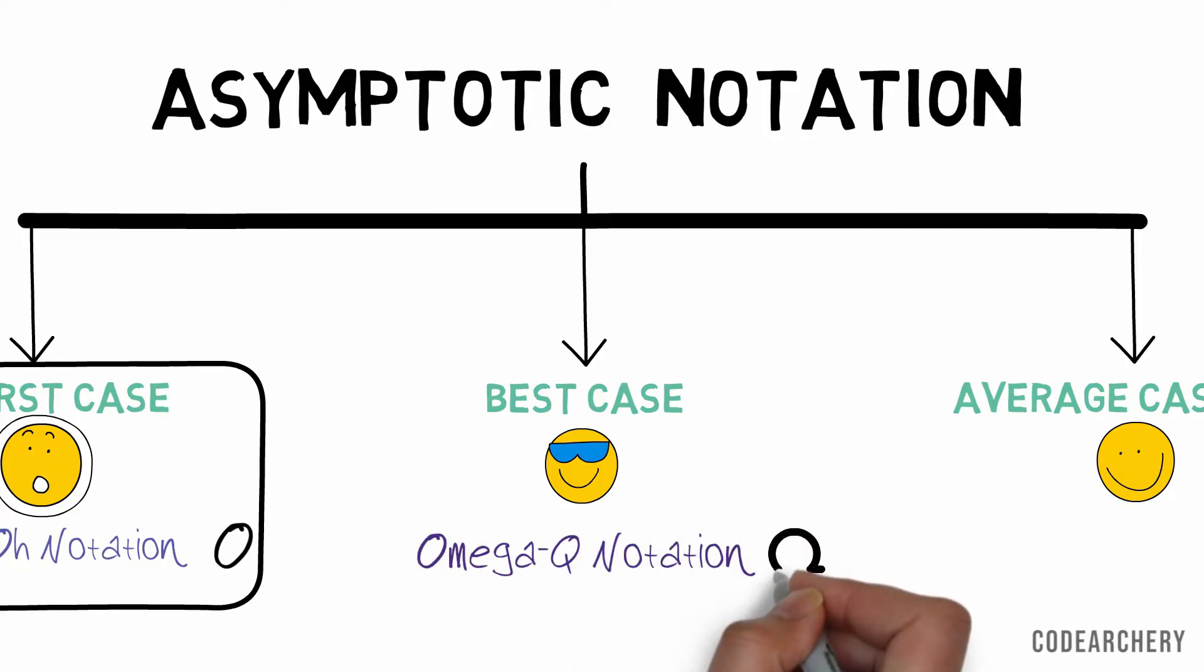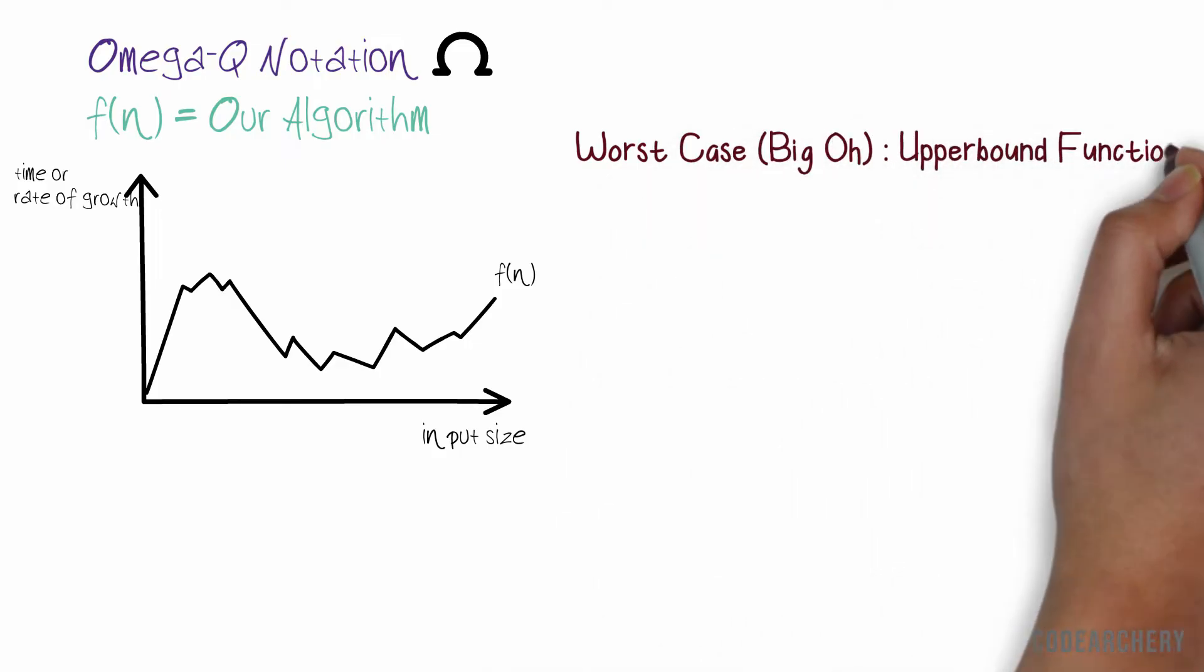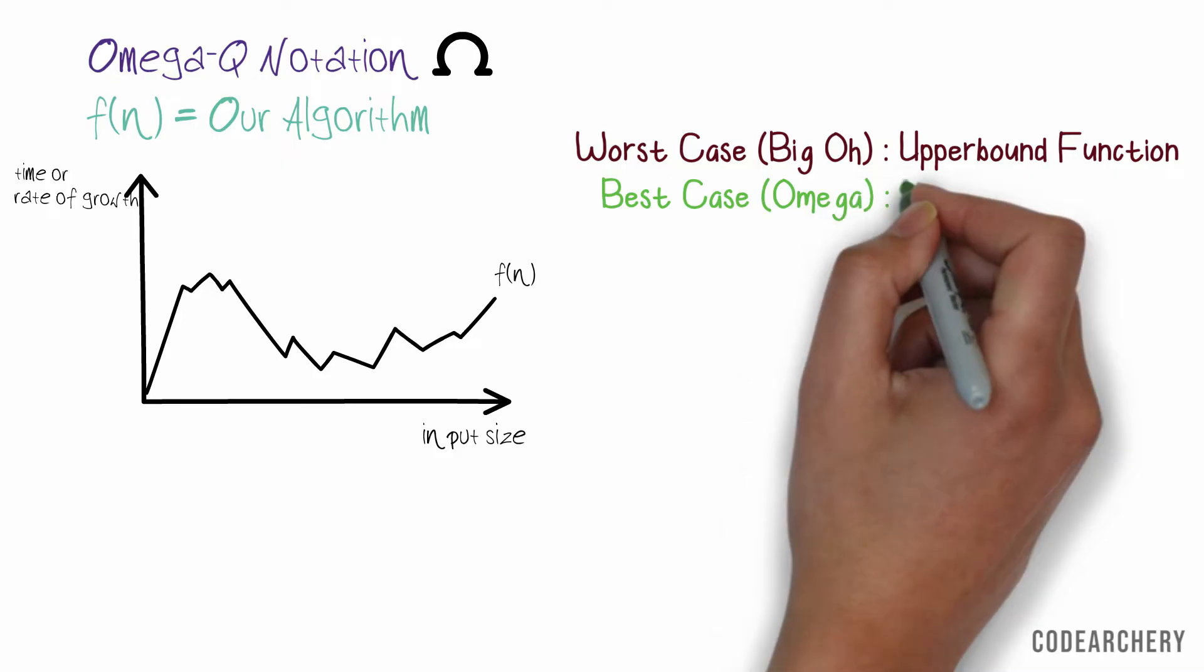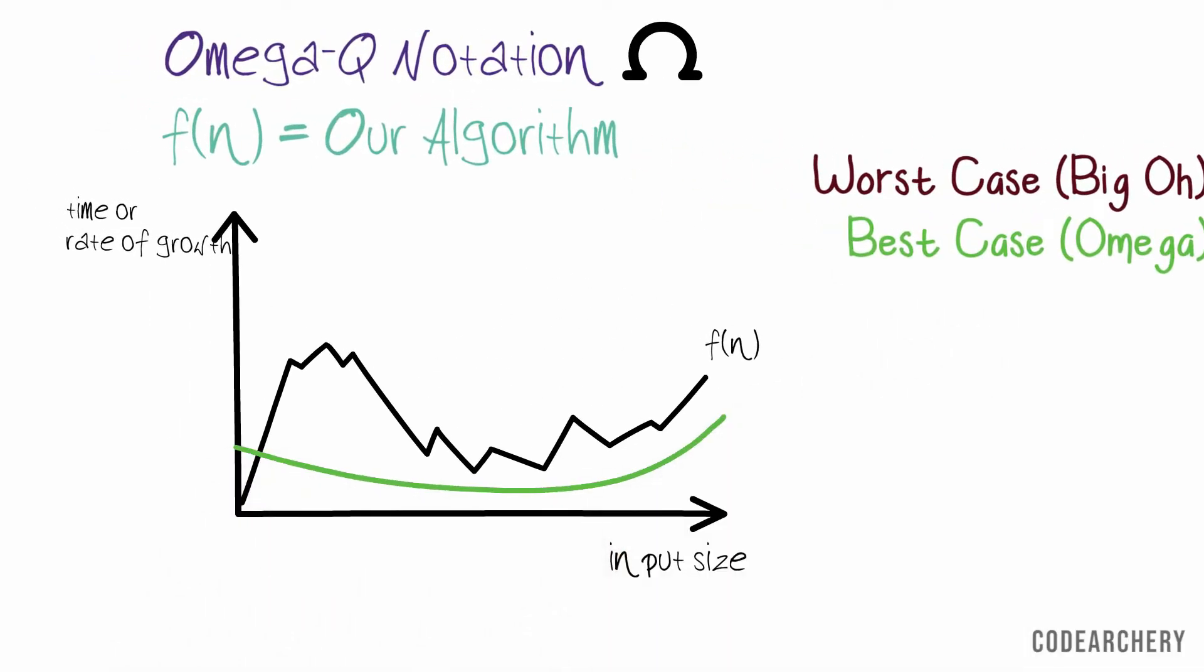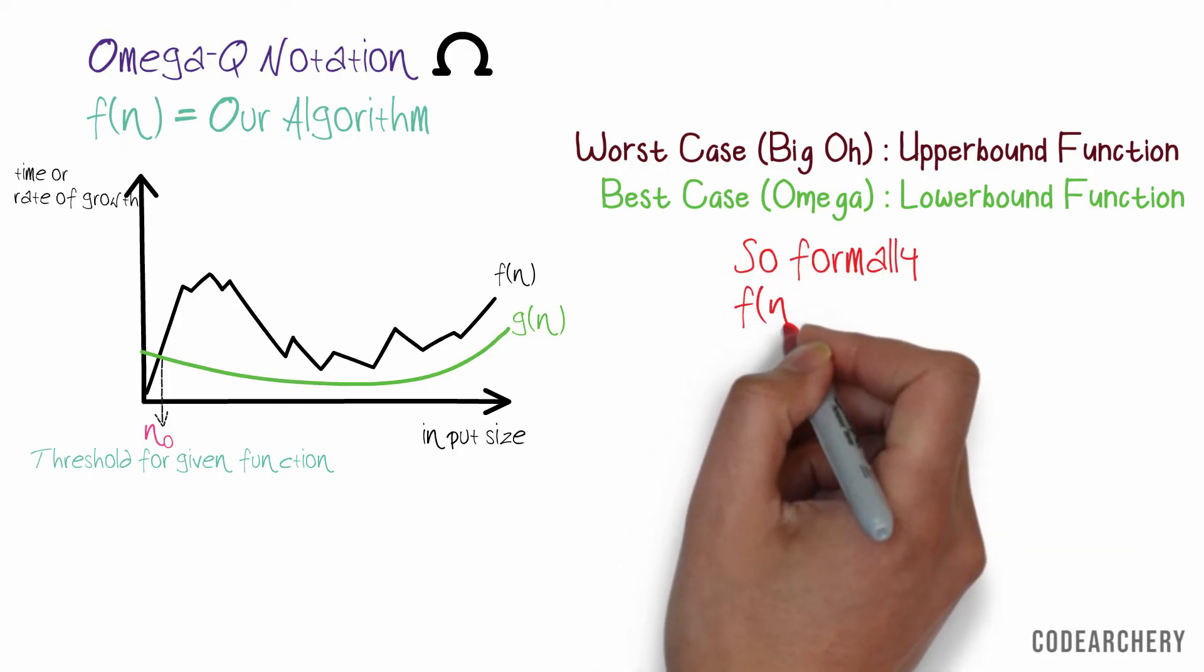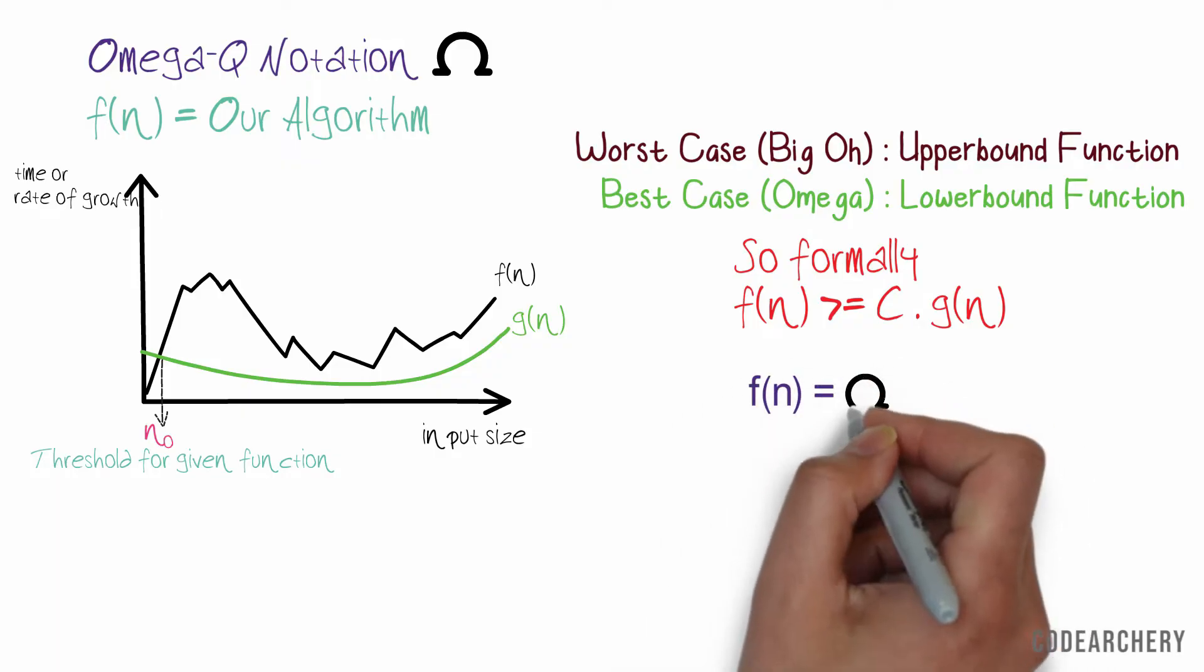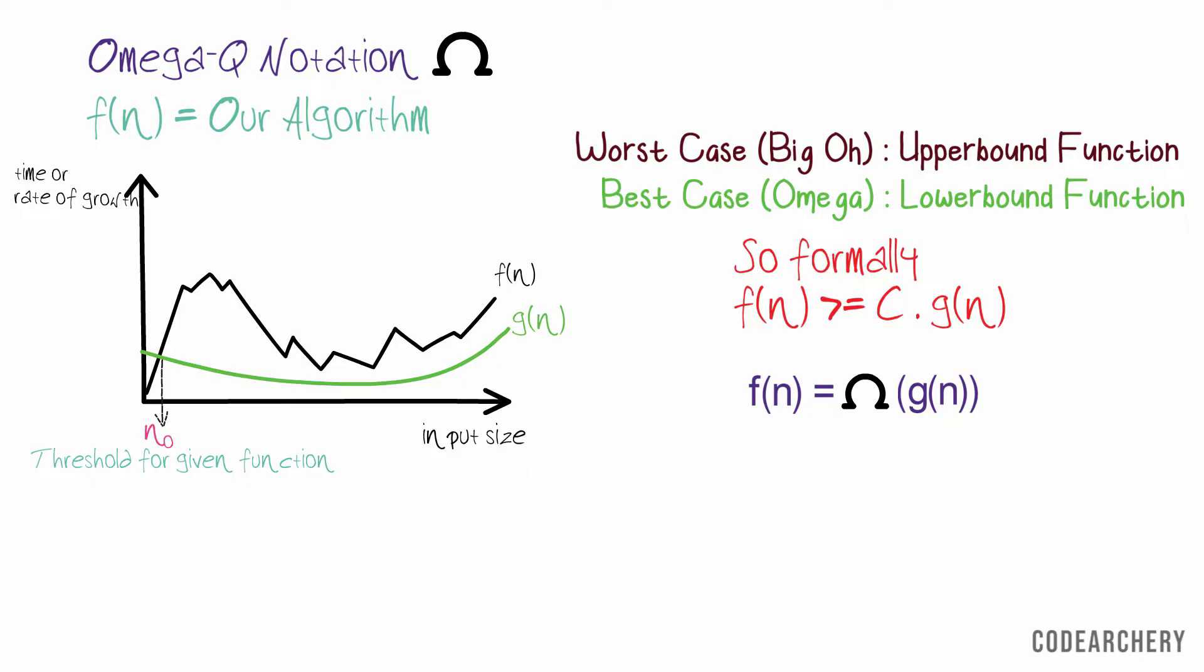We denote the best case with Omega. Again, f(n) represents our algorithm. Let's plot our graph. For Big O, we found an upper bound function. So for the best case, we'll find a lower bound function. So g(n) is our lower bound function and n₀ remains the threshold for our given function. So formally, now our definition is f(n) is greater than or equal to c times g(n) where we know that c is constant. So f(n) equals Omega of g(n). This is how we represent the best case scenario.